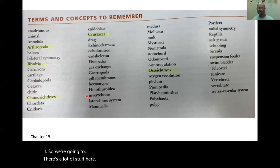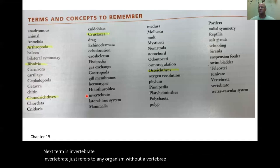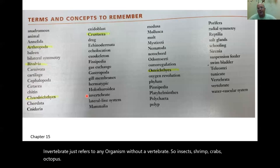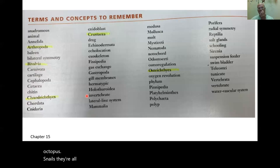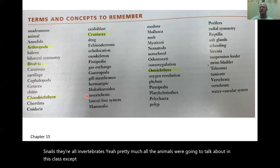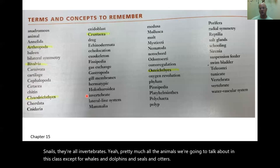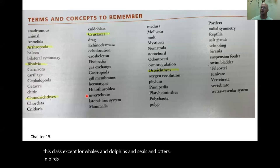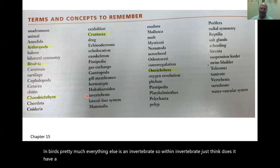Invertebrate refers to any organism without a vertebra. Insects, shrimp, crabs, octopus, and snails are all invertebrates. Pretty much all the animals we'll talk about in this class except for whales, dolphins, seals, otters, and birds are invertebrates. Just think: does it have a spine? If yes, it's a vertebrate; if not, it's an invertebrate.